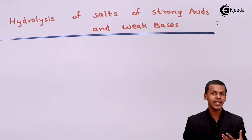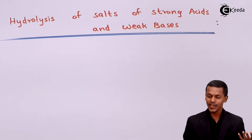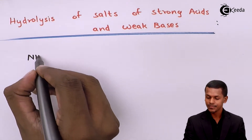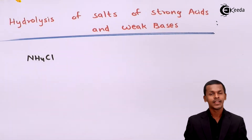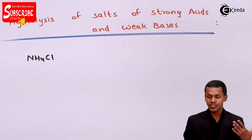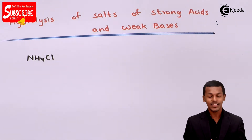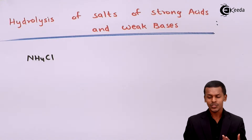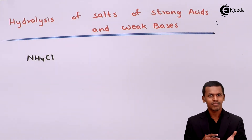We are adding a basic salt which is derived from a strong acid and weak base, and that is why we are taking the example of NH4Cl. This salt is made up of a strong acid, HCl, and a weak base, NH4OH. This is the salt that we are adding in water, for which the hydrolysis process will happen.